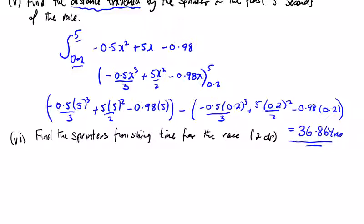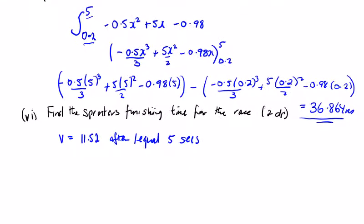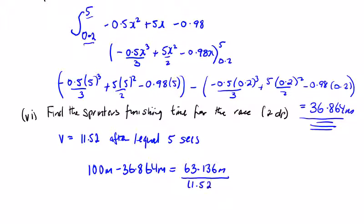Find the finishing time for the race. The velocity after 5 seconds is 11.52 m/s. He's already covered 36.864 metres in those first 5 seconds. So the remaining distance is 100 − 36.864 = 63.136 metres. At 11.52 m/s, that takes 63.136/11.52 ≈ 5.48 seconds, plus the initial 5 seconds — giving a total of 10.48 seconds, which is an extremely slow 100 metres.